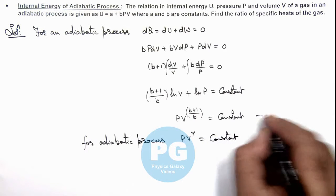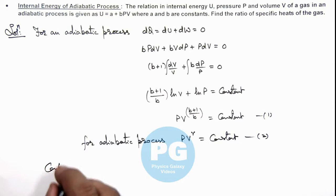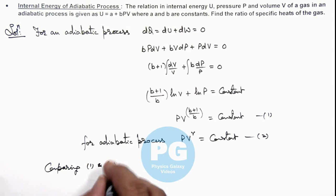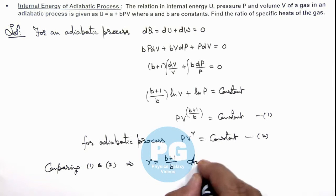So if this is equation 1, this is equation 2, then we can write comparing 1 and 2, this gives us the value of gamma is equal to (b + 1)/b. That is the result of this problem.